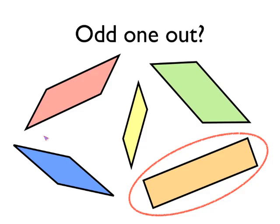Maybe you said that this was the odd one out. This rectangle was the odd one out, because it's the only shape there where all four angles in the shape are the same size.